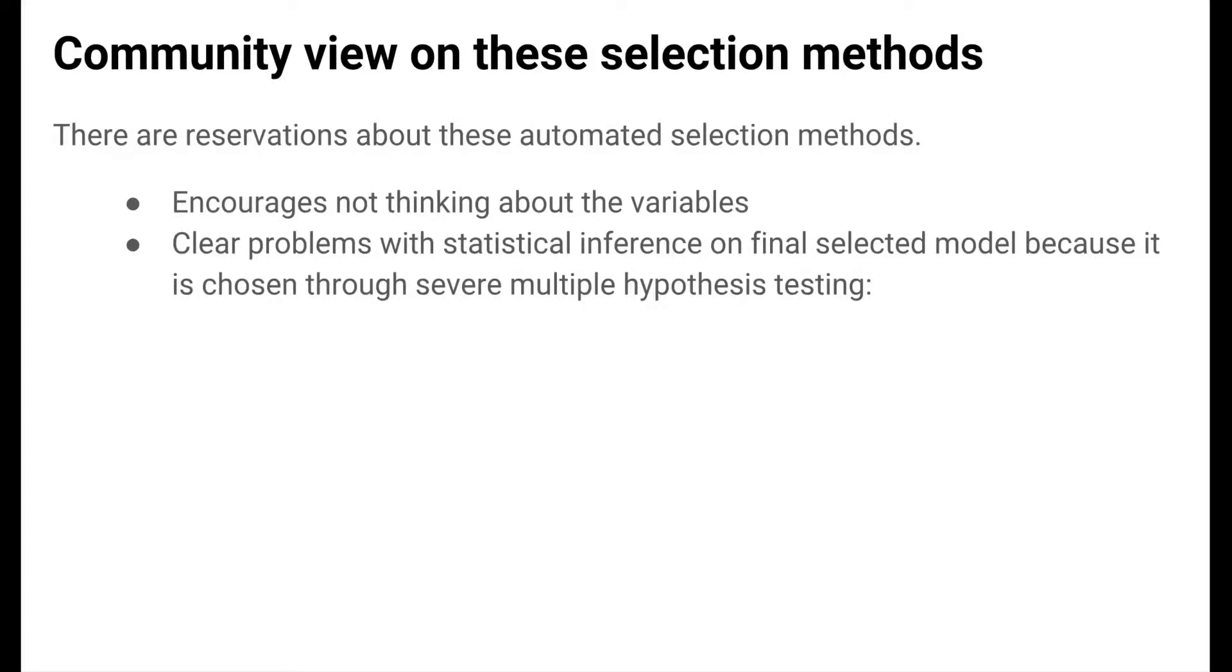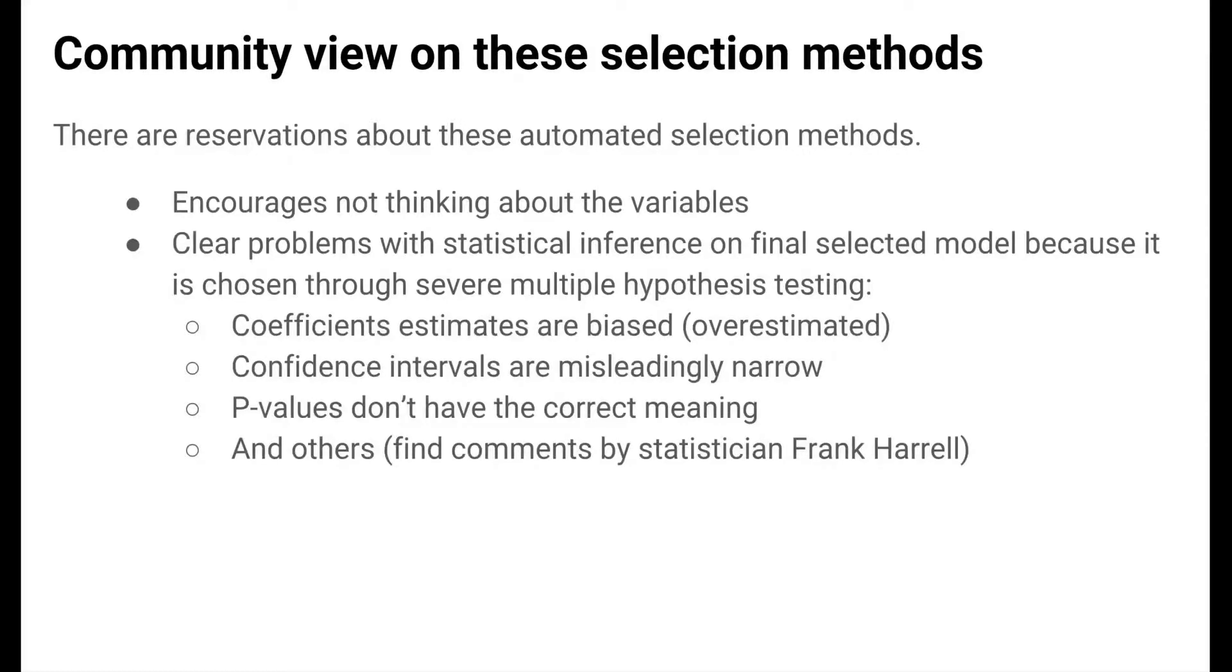Another important point that you should be aware of is that there are reservations about these subset selection methods within the professional community. For one, many feel that these automated variable selection methods encourage practitioners to not think about their data carefully, because we can just dump our data in and get out a model. Also, there are clear problems that have been demonstrated with statistical inference on the final selected model. Because we come to select the final model by trying many, many models, multiple hypothesis testing is a big issue. With multiple testing, the idea is that testing many, many hypotheses runs the risk of something being statistically significant just by chance.